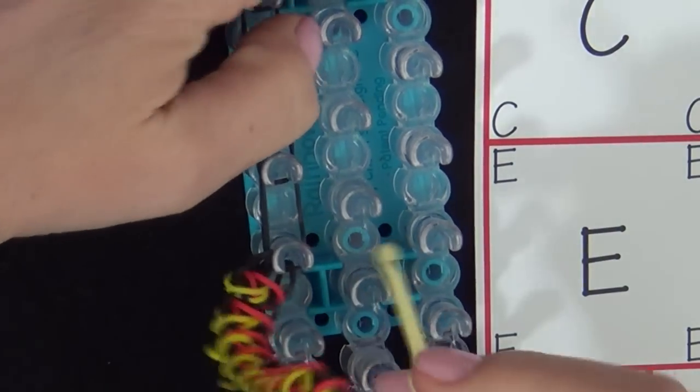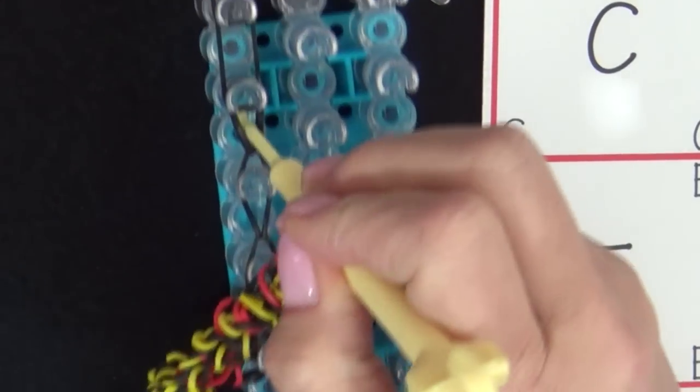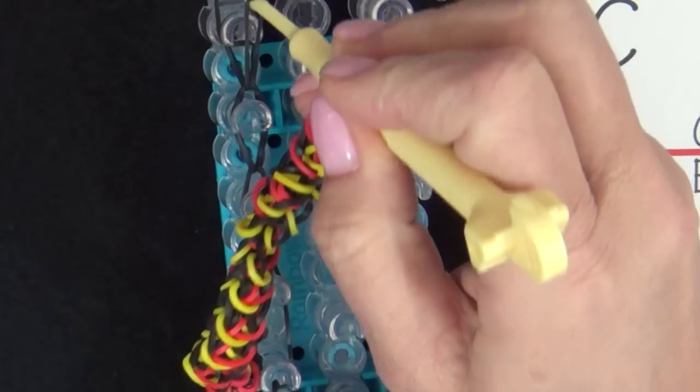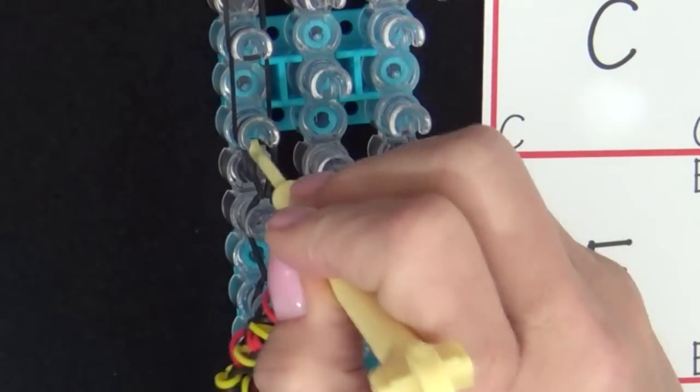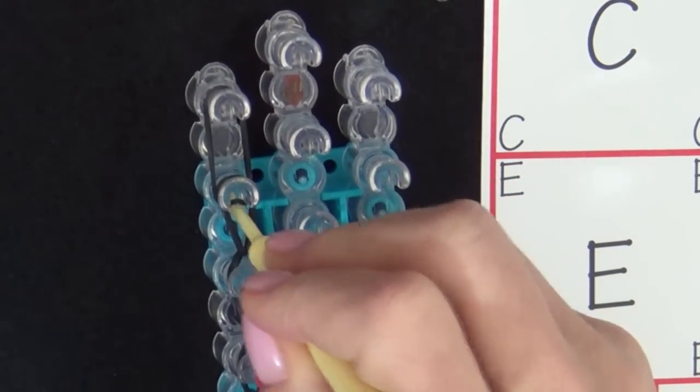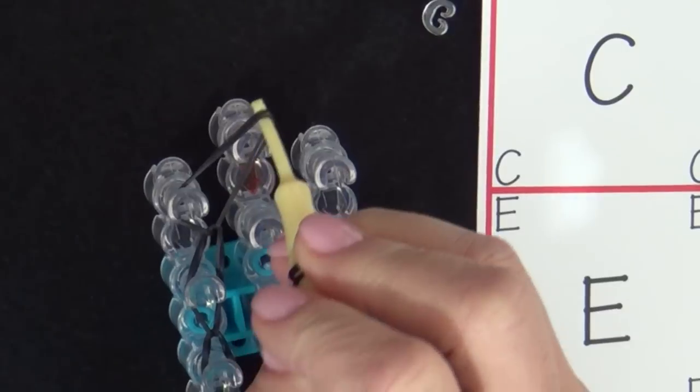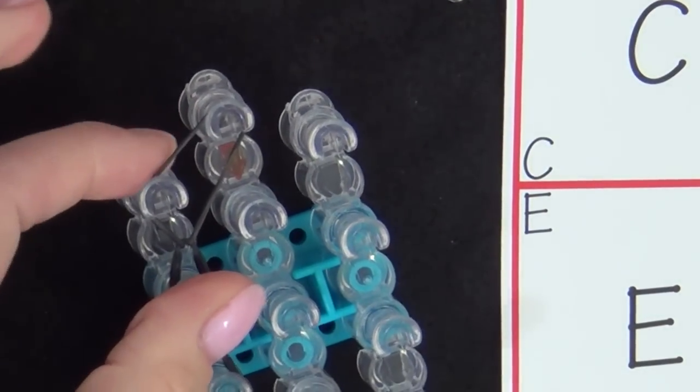Now we'll loop the bands. And once you get to that last pin, you'll pull it to the middle one. And this is the area where you can attach your C-clip.